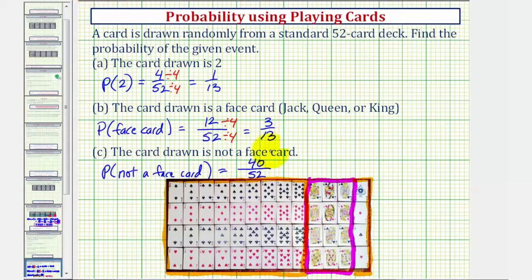Simplifying with a common factor of 4 gives us 10/13.